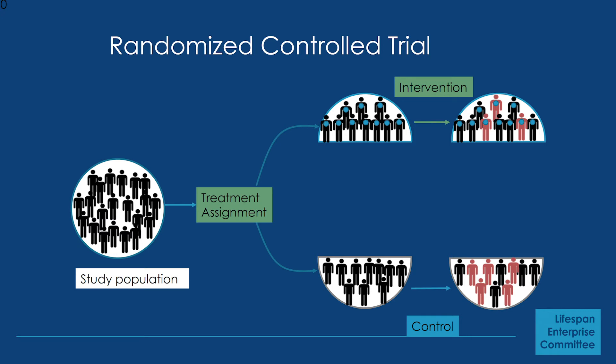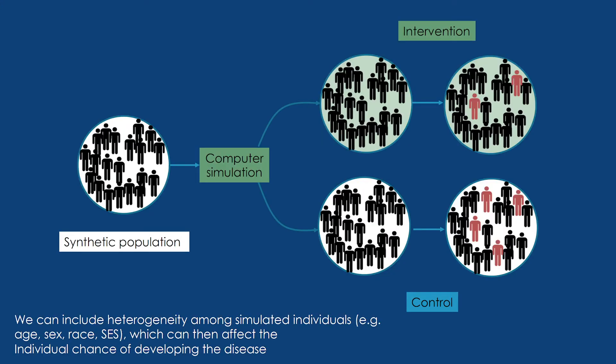That's where we get our impact estimate. Similarly, that's the same way we go about doing the computer simulation model. We create our synthetic population using information from national surveys, inform and follow simulated people over a certain period of time, observe the outcomes, and contrast them. And importantly, in this computer model we're able to expose and unexpose the same people.